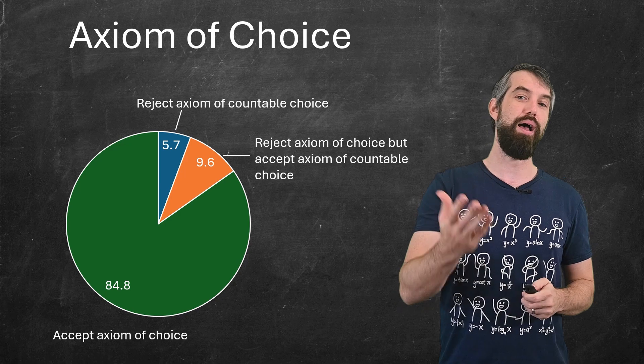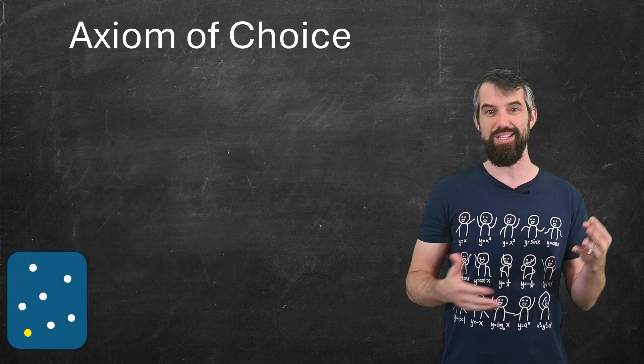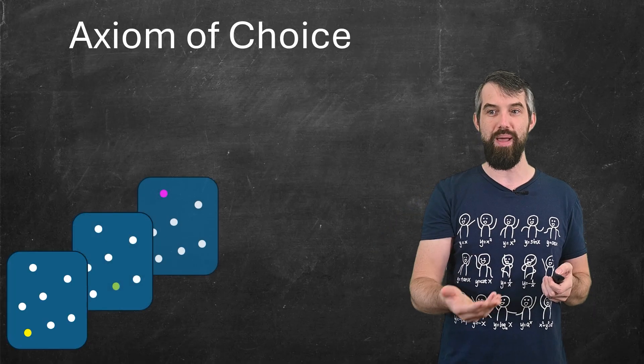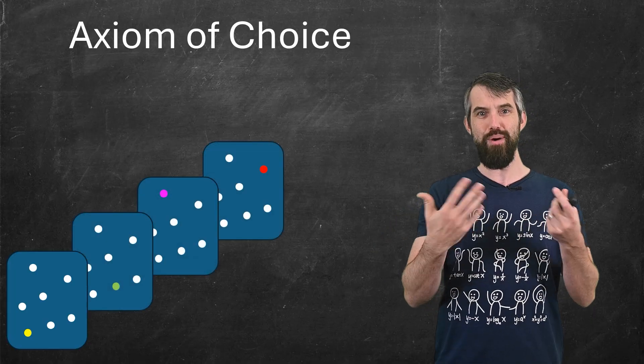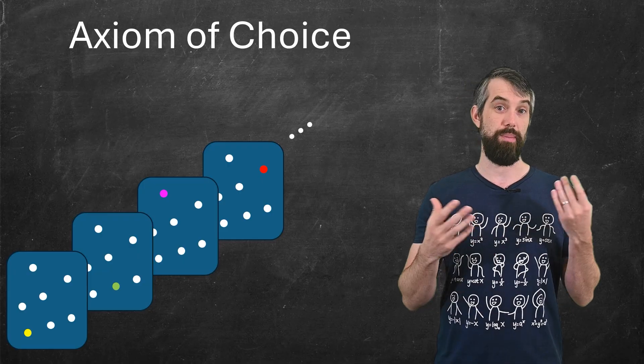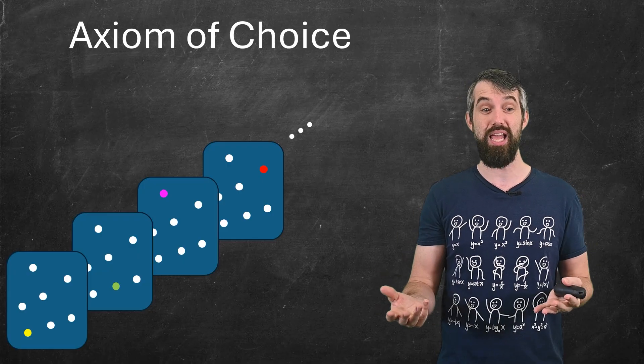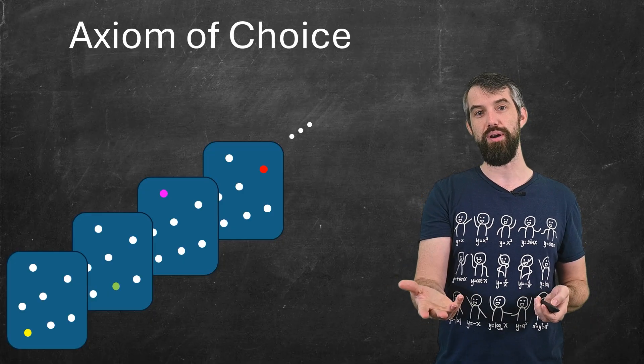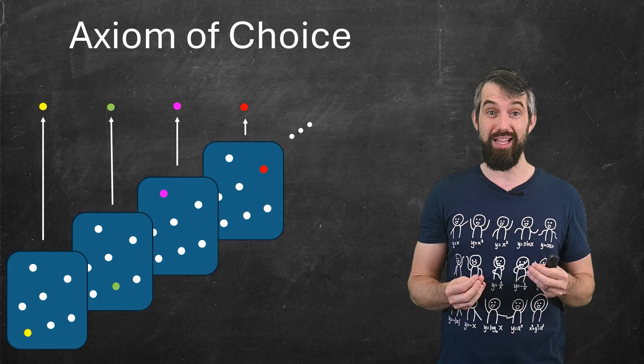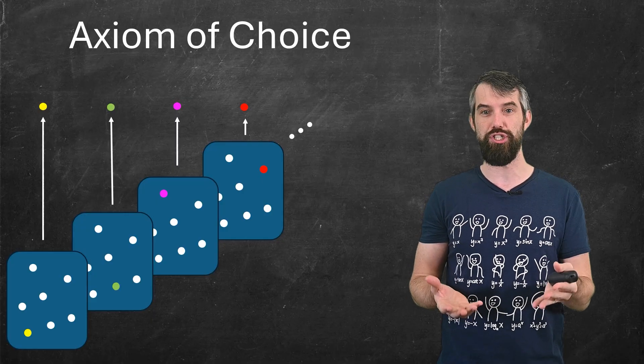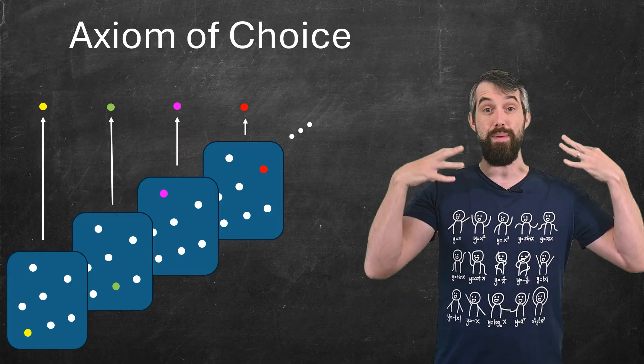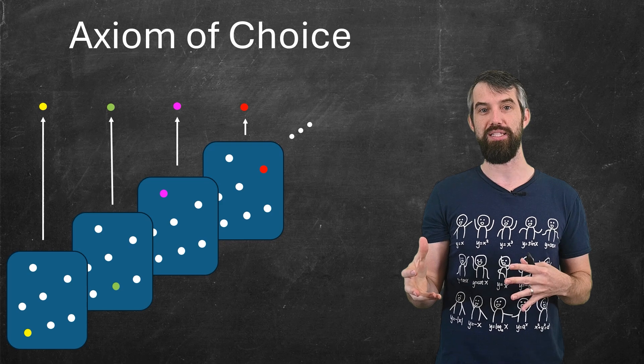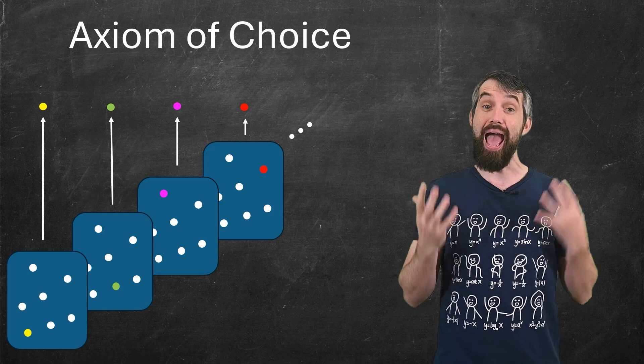So what is the axiom of choice? Imagine I've got like a bag, it's got a bunch of marbles inside of it. And then I have another bag with another bunch of marbles, another bag, another bag. And then I want to imagine that this goes on to infinity. If I only have a finite number of bags, it's very easy to say, well, I can pick one marble from the first, one marble from the second, and one marble from the third. But if I have infinitely many, can I keep on doing that association with infinitely many bags? Is there a way to come up with a choice function that picks one marble out of every single one of these bags? That you can do this is called the axiom of choice.